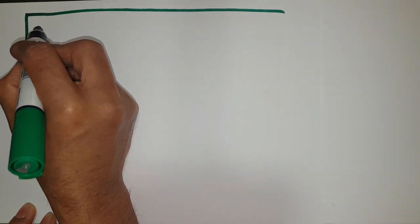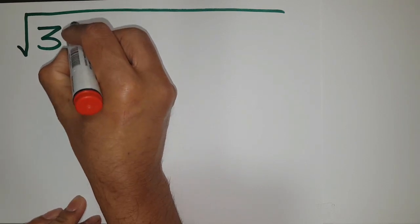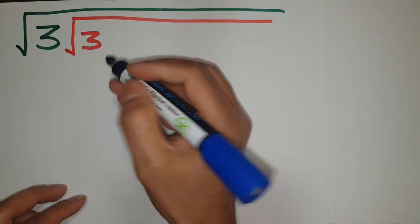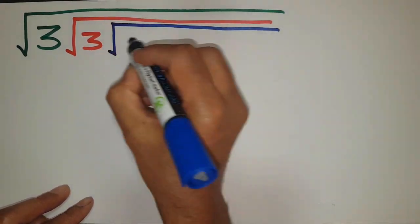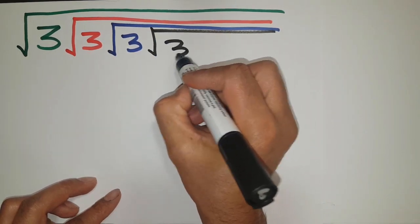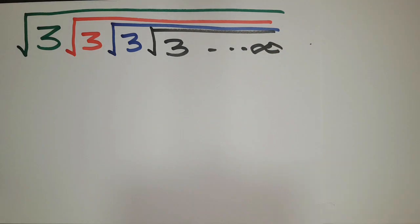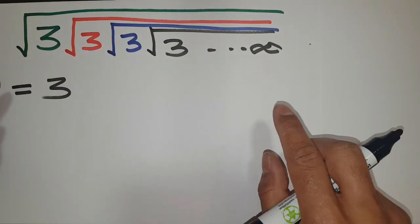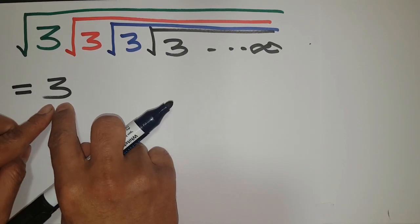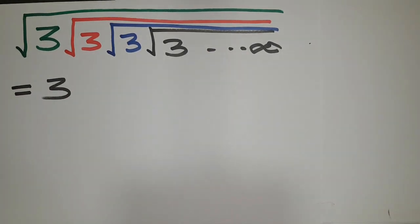Square root 3, this covers another square root 3, which covers another square root 3, and if this series continued until infinity, what's the answer of this interesting infinite series? This is so simple — the answer is equal to 3. Don't go, I will explain the hidden secret behind this answer.